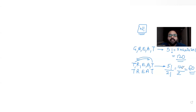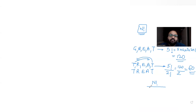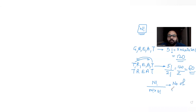So it becomes 120 / 2 = 60 unique words that can be formed with the letters of TREAT. The general idea is: if you have n letters to arrange, you get n! arrangements. If one letter repeats m times, divide by m!. If another letter repeats t times, divide by t! as well. This gives you the number of unique words, and that is the idea we'll use in the question.